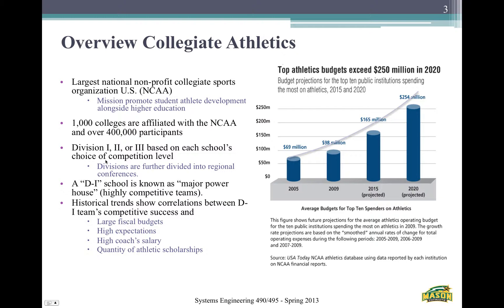These are the major powerhouses in Division I. The competitive success of Division I programs is mainly based on their budget. As you can see on the graph on the right, from 2005 to 2020, the budgets of the top 10 public institutions' athletic departments increased from $69 million to $254 million.